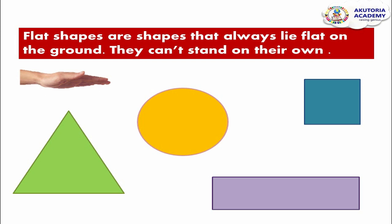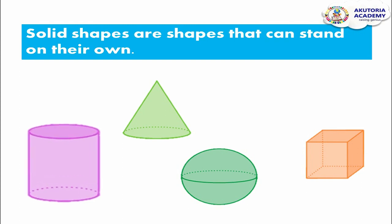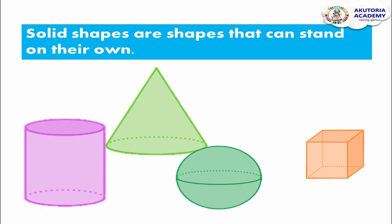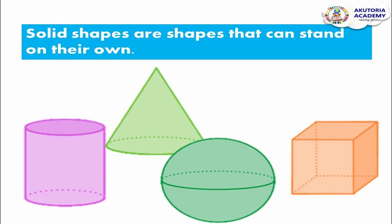Solid shapes are shapes that can stand on their own. Examples of solid shapes are cylinder, cone, sphere, and cube. The way we use our hands to show a solid shape is: fold your fist and say 'solid shape.' Fold your fist, move it downward, and say: solid shape! Good job.